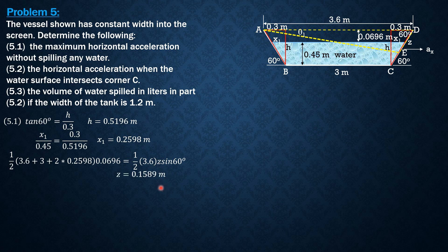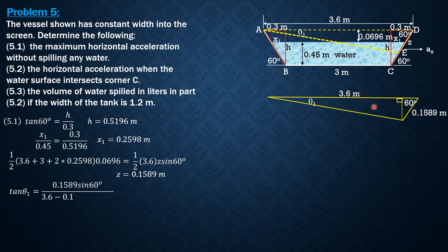So one half 3.6 times Z sine 60 - remember the area of a triangle is one half product of adjacent sides times sine of the included angle. So solving for Z, Z equals 0.1589 meter. Having found Z, let's isolate this triangle bounded by yellow boundaries so we can analyze it well. Then let's drop this vertical line from corner E so we can form this right triangle.